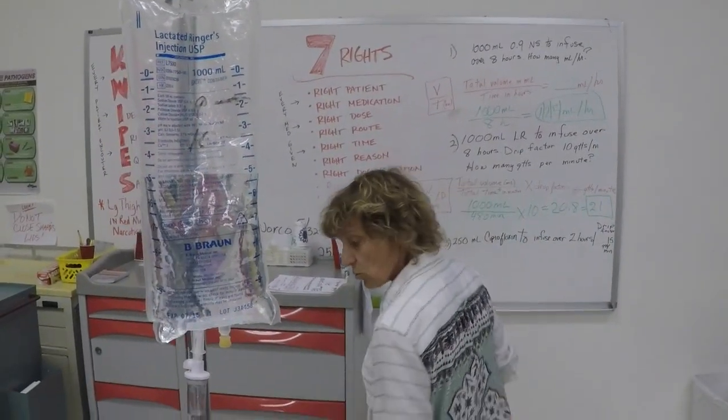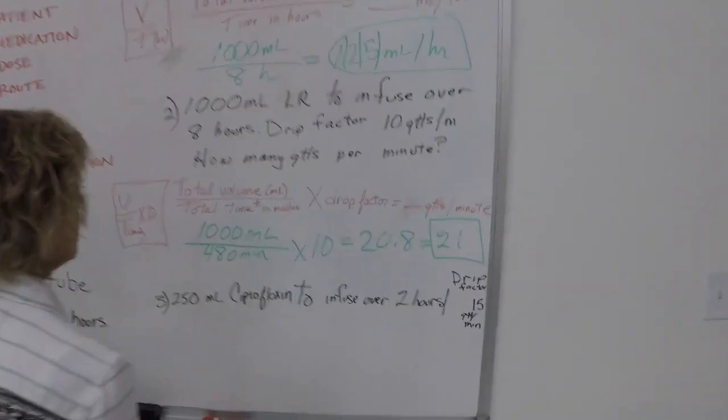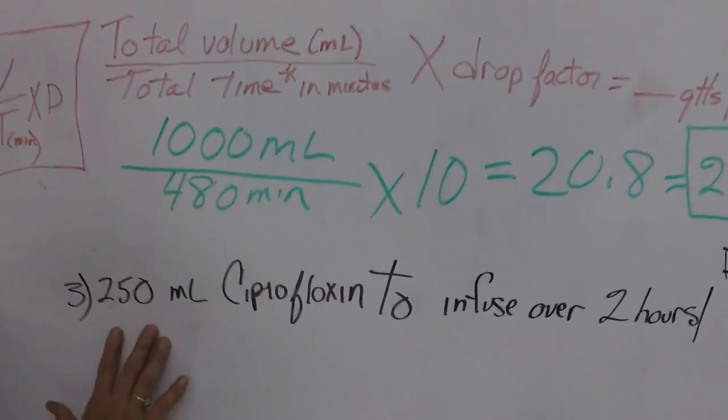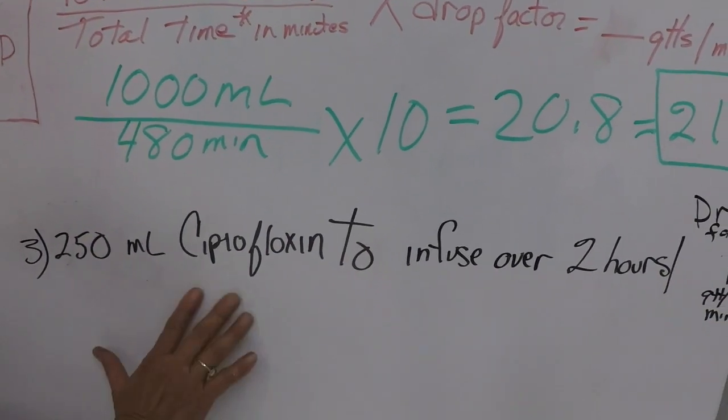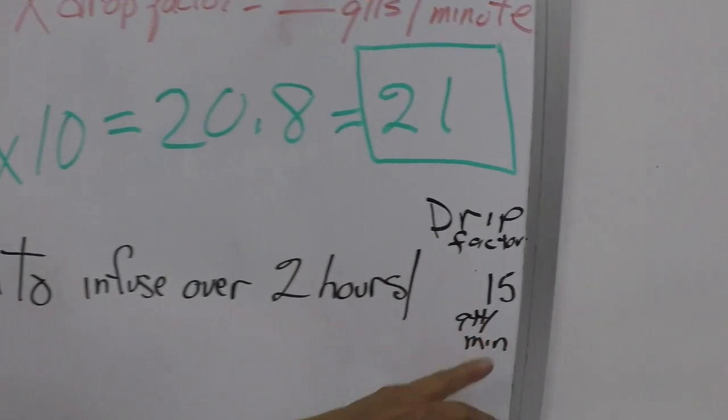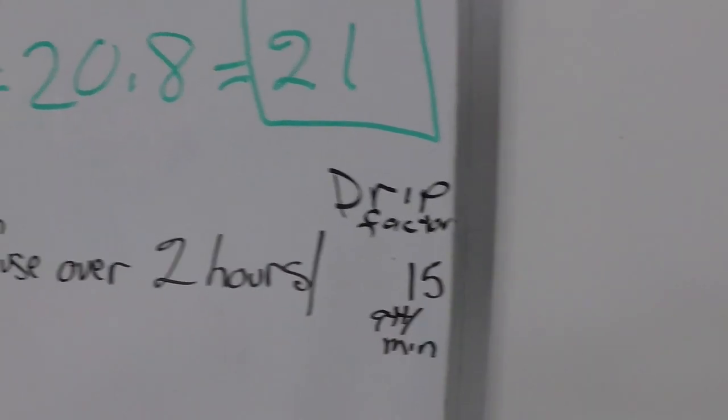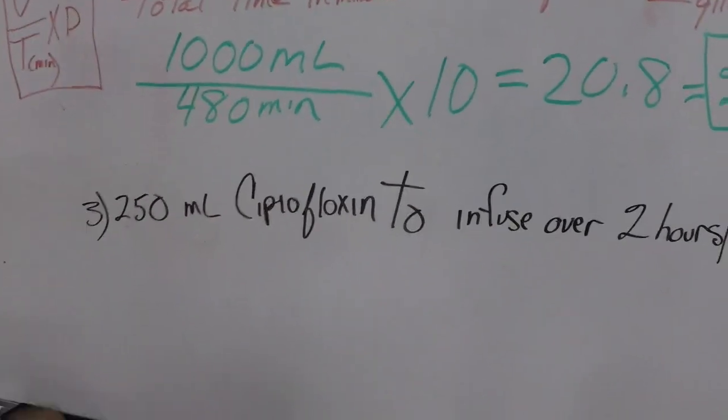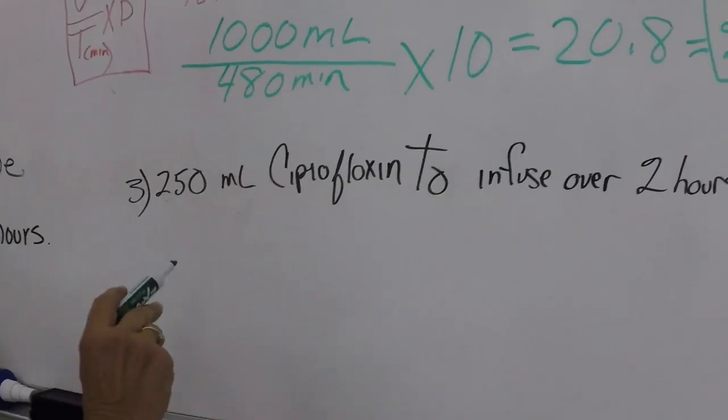Okay, alright so let's just do one more. So we have a 250 milliliter bag with ciprofloxacin in it to infuse over two hours. Our drip factor is 15. So what are we going to have here? Drops per minute. We need to set this IV up manually.